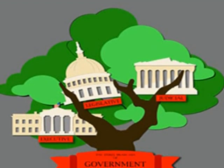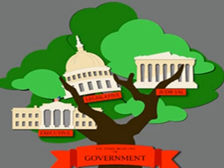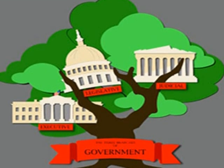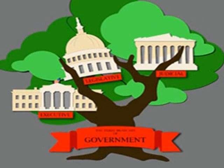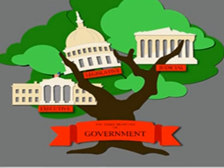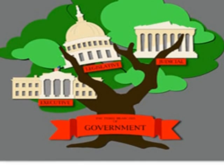Each branch has an equal part in making laws, but most laws don't get passed because each branch has to agree on the law.